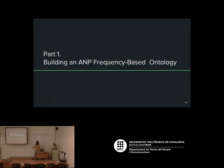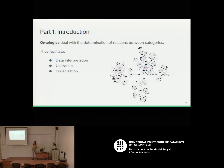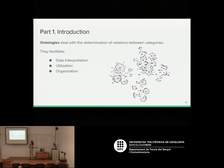Now let's go through the first part of the project: building an ontology for the adjective-noun pairs. Ontologies deal with the determination of relations between different kinds of categories, and this is a recurring artificial intelligence topic because ontologies facilitate data interpretation, utilization, and organization.